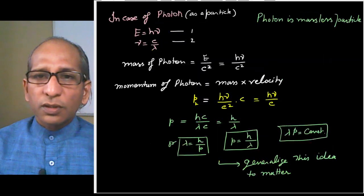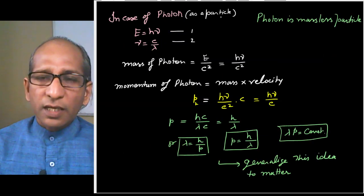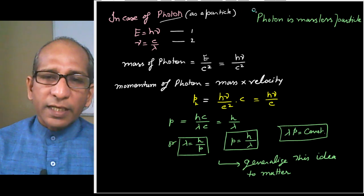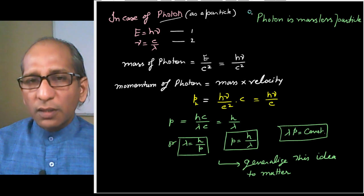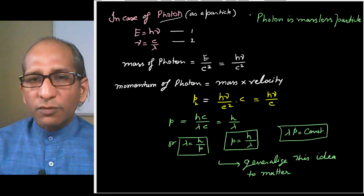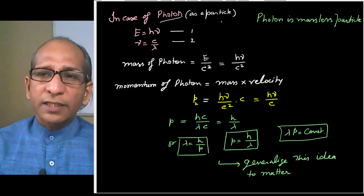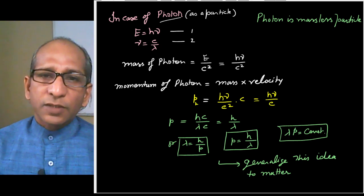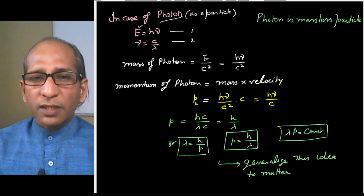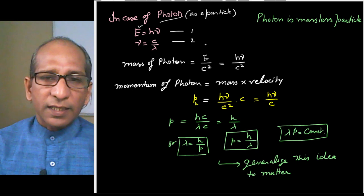De Broglie first considered the photon as a particle. Light is an electromagnetic wave — light energy travels in terms of packets of energy called photons. One photon can be represented by energy E = hν, where ν is the frequency and c = νλ.